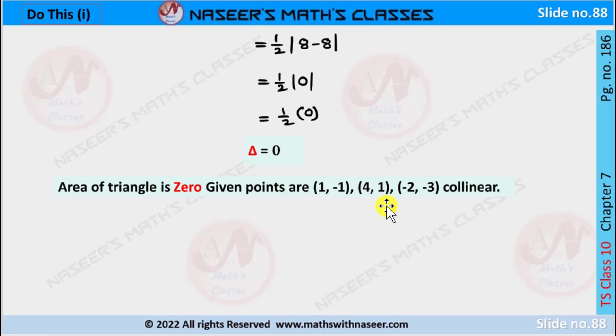Area of the triangle is 0. The given points (1, -1), (4, 1), and (-2, -3) are collinear points, meaning they lie on the same line segment.